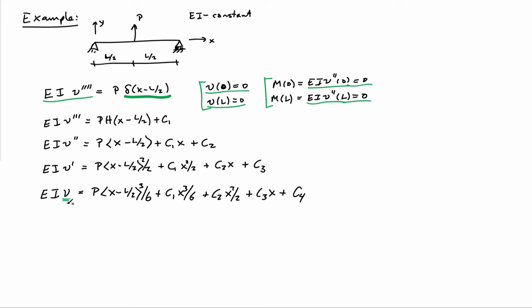Now, there are four constants of integration, c1, 2, 3, and 4. And we'll eliminate those using the boundary conditions. To do the procedure for elimination, it can be helpful to apply the boundary conditions in an order in which it's easy to determine them one at a time.